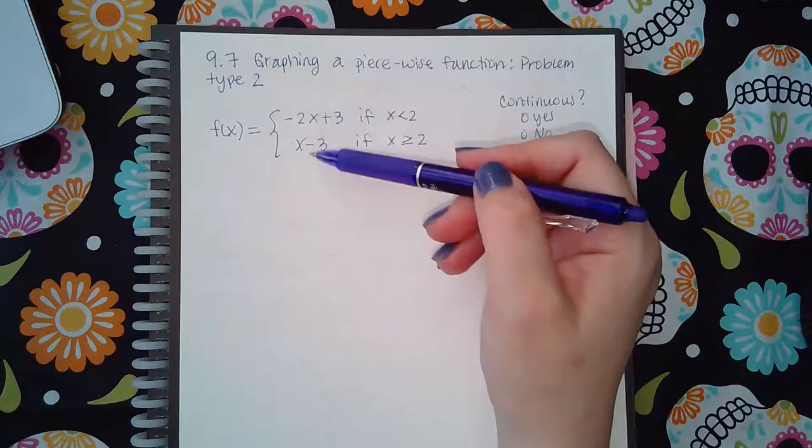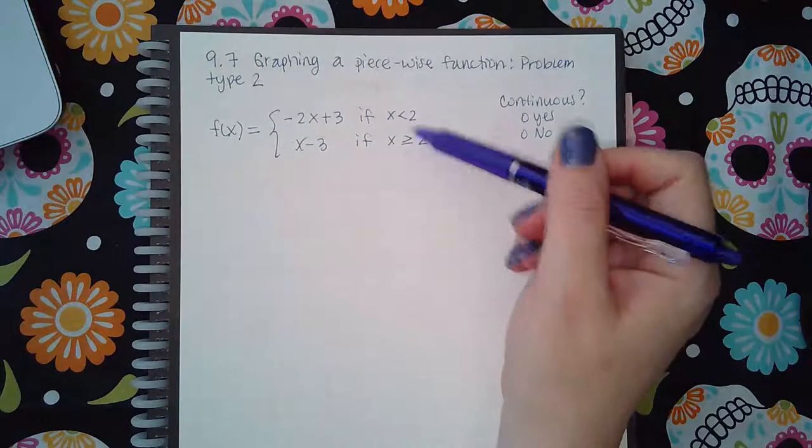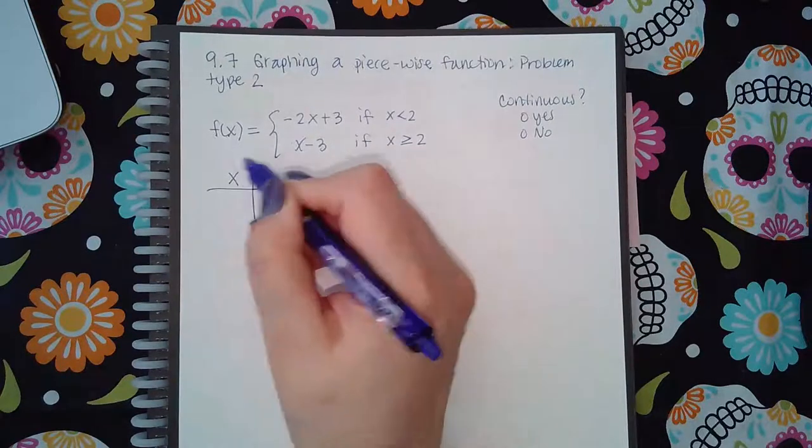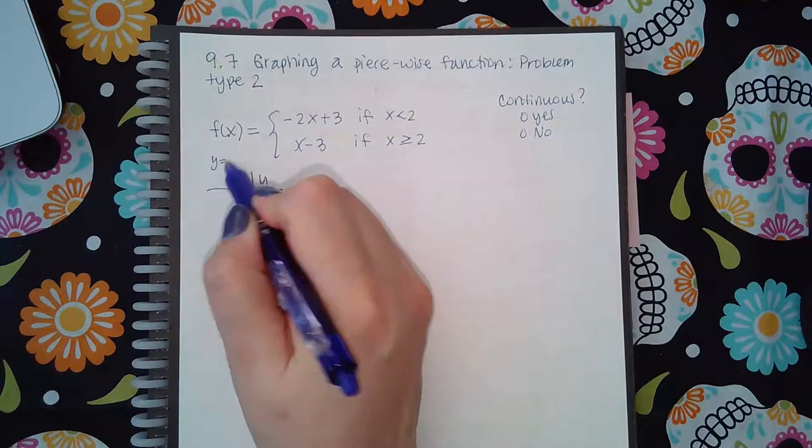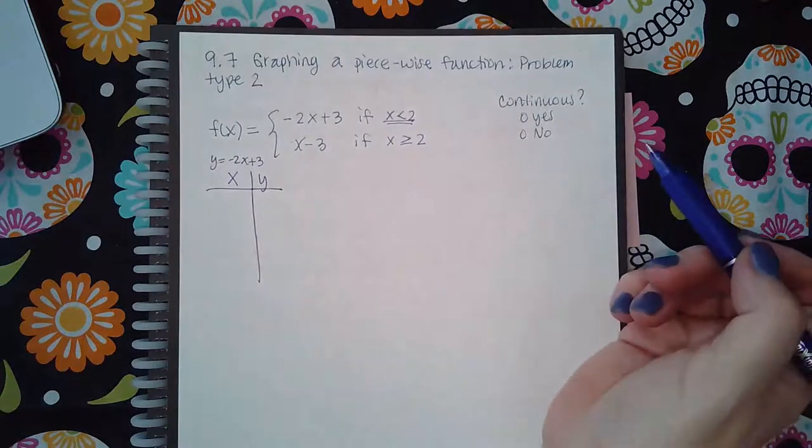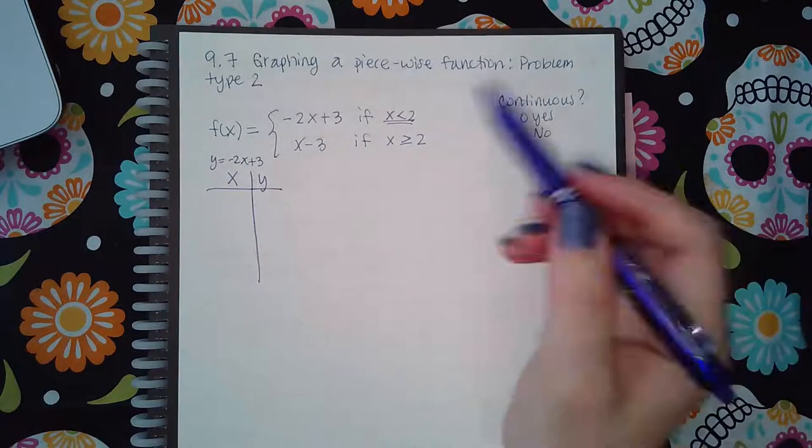For the first function y equals negative 2x plus 3, notice the conditions to use that function - x has to be less than 2. So we're going to start with 2 and then pick values that are less than 2, like 1 and 0.